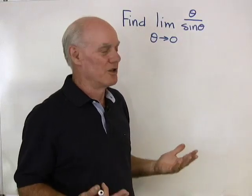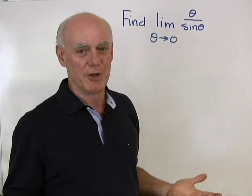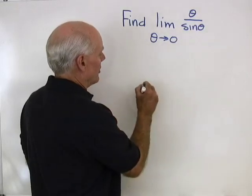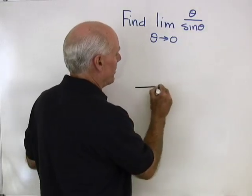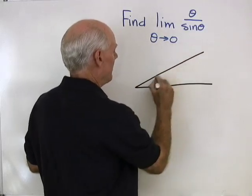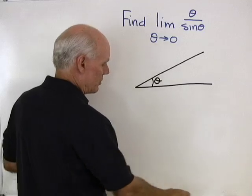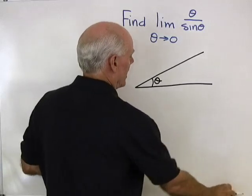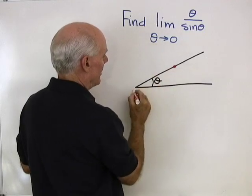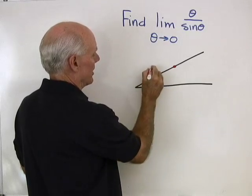We can't just substitute in zero to find the limit — we're going to have to do some other work. Let me show you how to go about this problem. I'm going to draw angle theta right here, and then go out to the terminal side of theta.